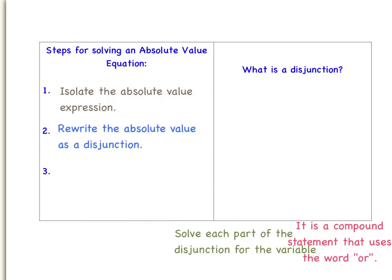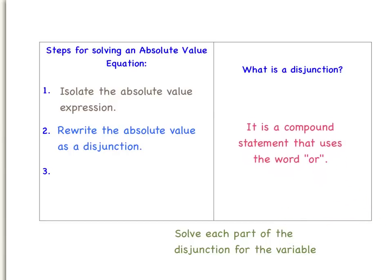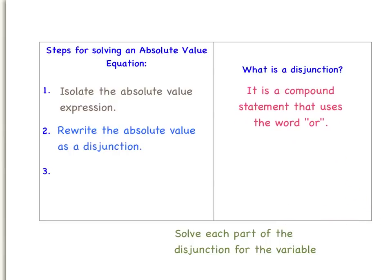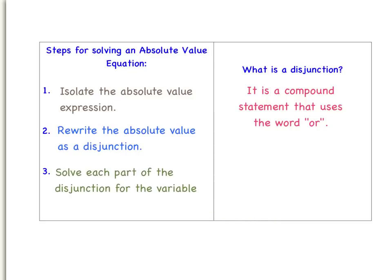Next, you need to rewrite the absolute value as a disjunction. Now what is a disjunction? It is a compound statement that uses the word 'or.' This term disjunction will be a little easier to explain when we do an example. So let's move on to the next step, which is to solve each part of the disjunction for the variable.